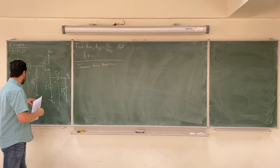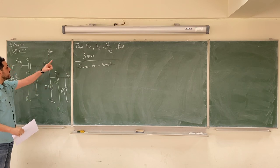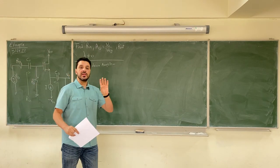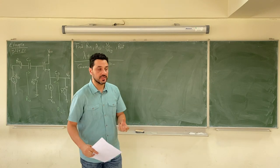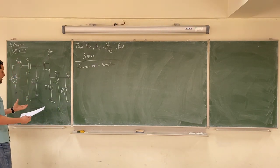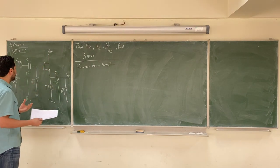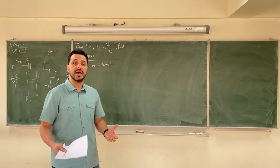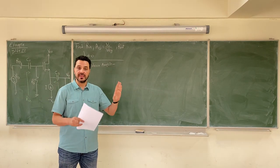We need to calculate the input resistance looking from this point, the output resistance looking from here, and the gain between the output and the input. It says that lambda is not equal to zero, which means we should take RO into account. So we'll go directly to the AC analysis by plotting the small signal circuit, assuming that the DC analysis has been done already.